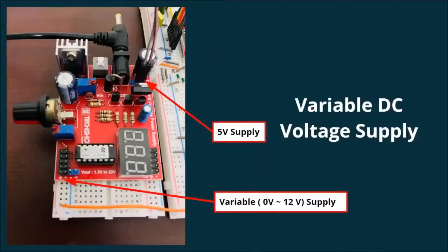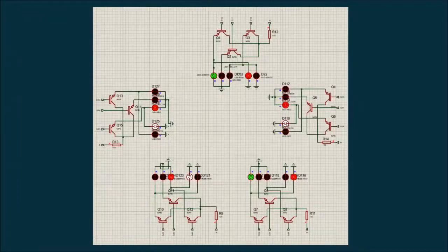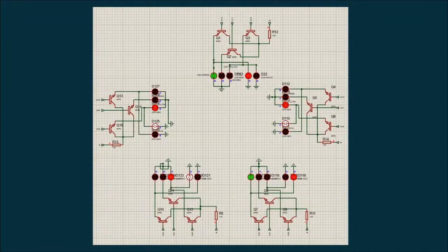The output of each of the ICs goes to the base of the transistor, and in the emitter side, we have connected our individual LEDs. In this way, we have solved the voltage shortage problem that we encountered in the first case.